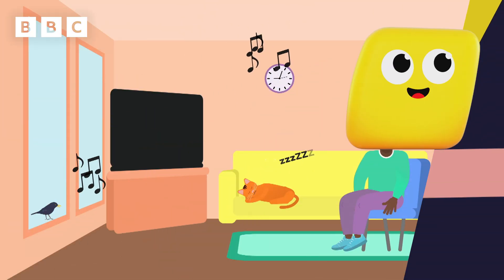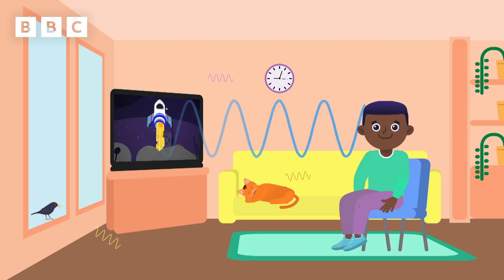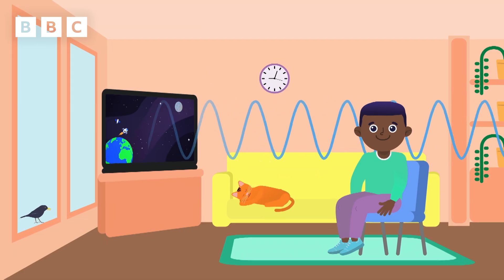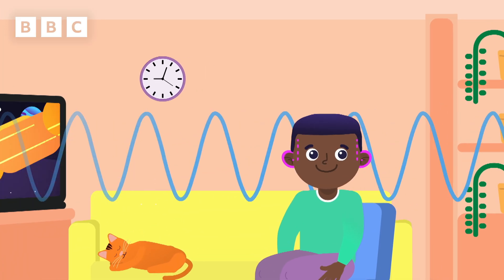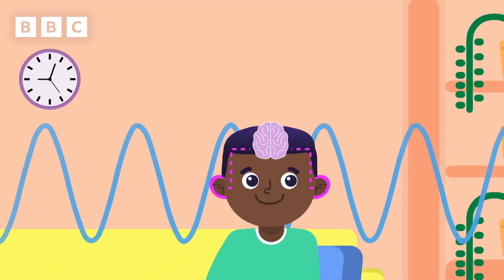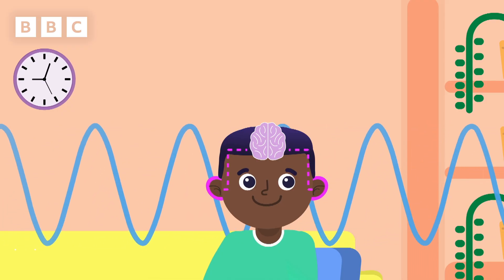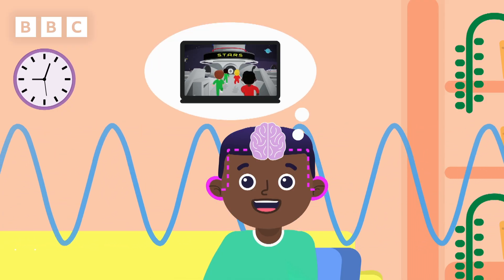Every sound you hear is made by vibrations. Whenever you hear something, it's because vibrations are travelling through the air and being picked up by your ears, which then pass that information to your brain. Your brain is really smart. It can interpret what different vibrations sound like.